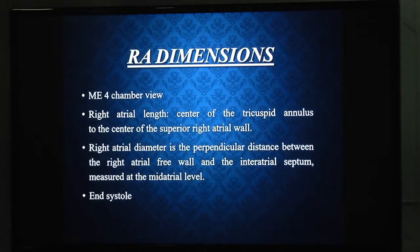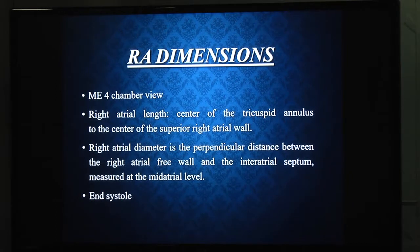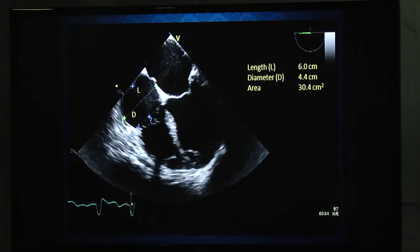RA dimensions are measured best in the four-chamber view only. There are two measurements: right atrial length and right atrial diameter. The length is measured from the center of the tricuspid annulus to the center of the superior right atrial wall. The diameter is the perpendicular distance between the atrial free wall and the inter-atrial septum at the mid-atrial level. Both measurements are done in end-systole.